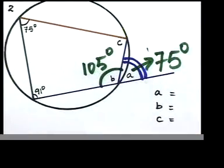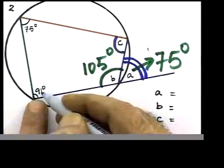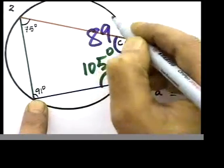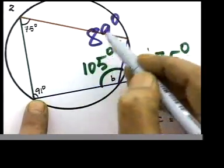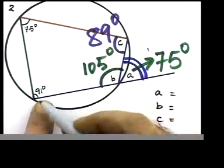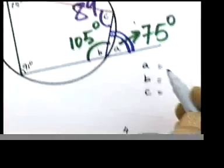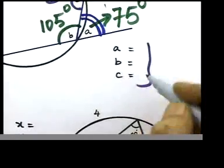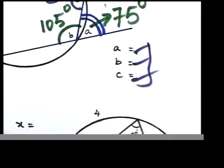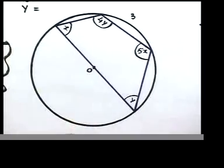Now what is C? That angle is 91, so C should be 89. Because 89 plus 91 adds up to 180. All right, fill those three blanks please. Let's go to question number three.